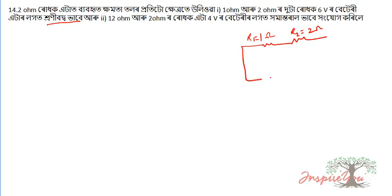For question 14, V is equal to 6 volts. The 2 ohm resistors are compounded — the common result of the 2 ohm configuration is considered.